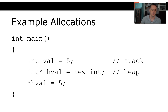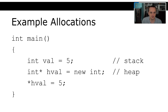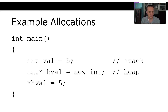Let's say we have a main function and we declare `int val = 5`. That's just a plain primitive integer in C++ with a value of five. Whenever we allocate a primitive type, class, or struct with no extra symbols like this, that memory goes on the stack.